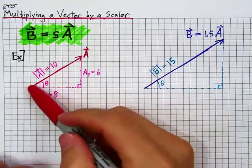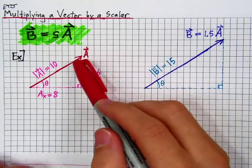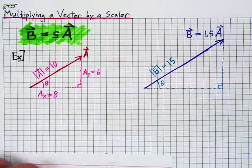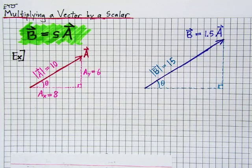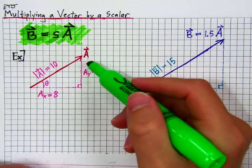Suppose we have some vector a, and we multiply a by a scalar, a number, let's say 1.5 for instance. It turns out if I multiply the vector a by the number, the scalar 1.5,